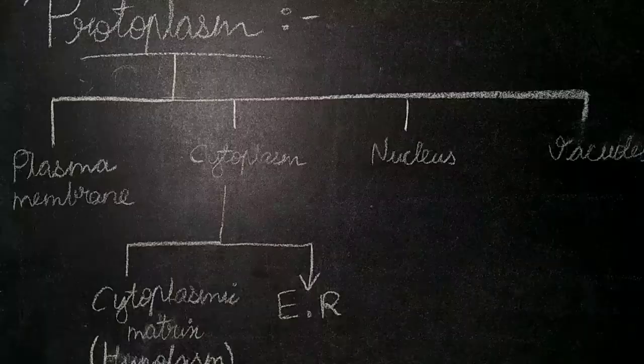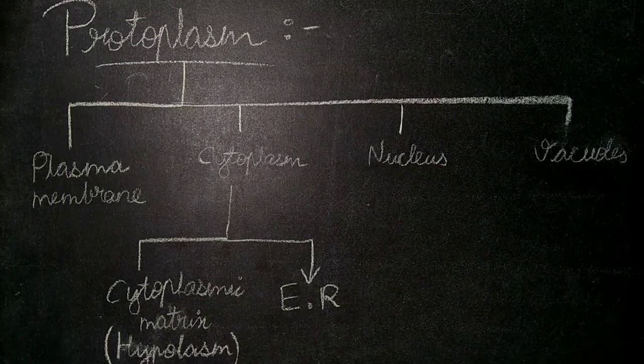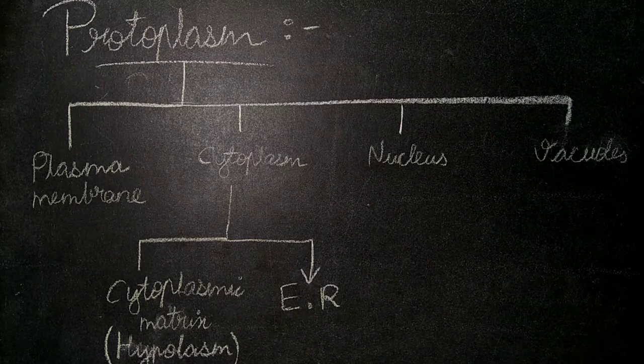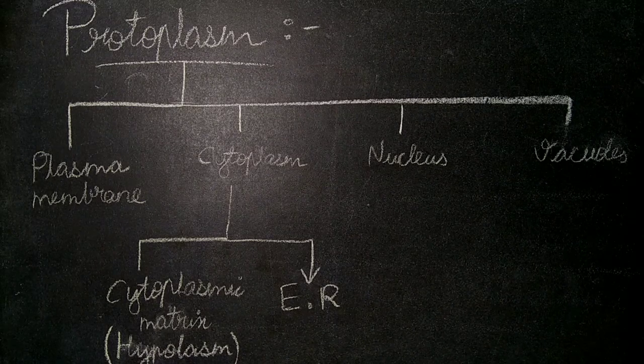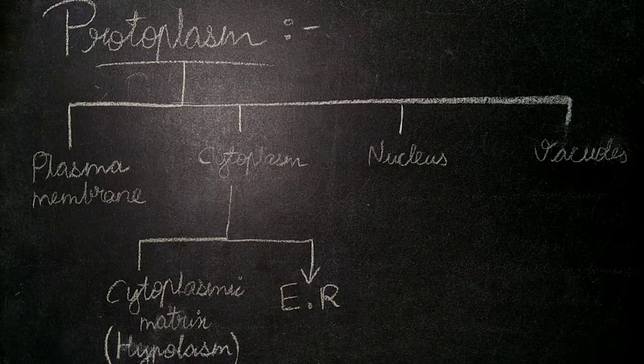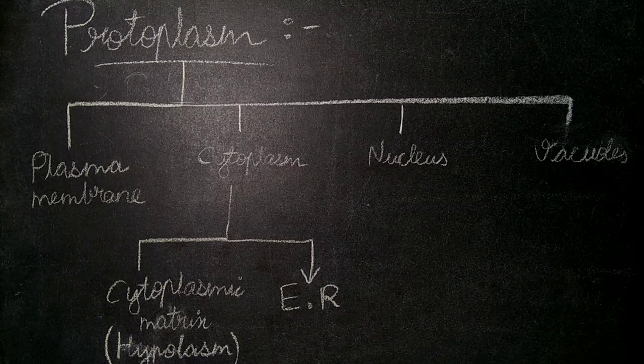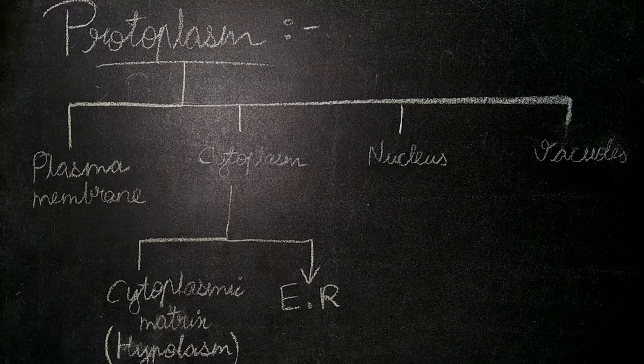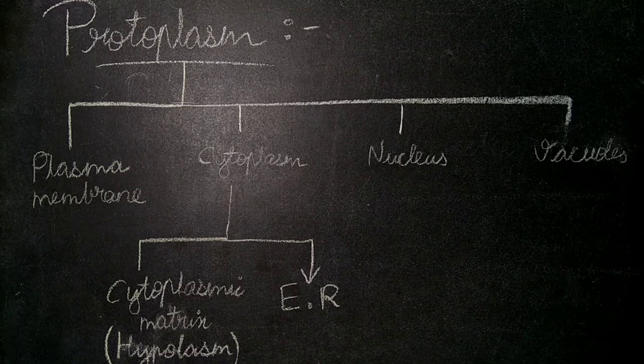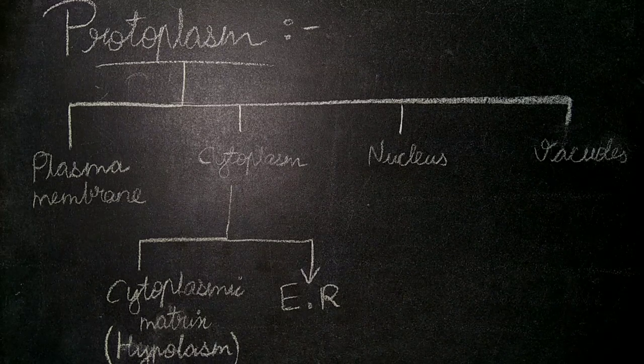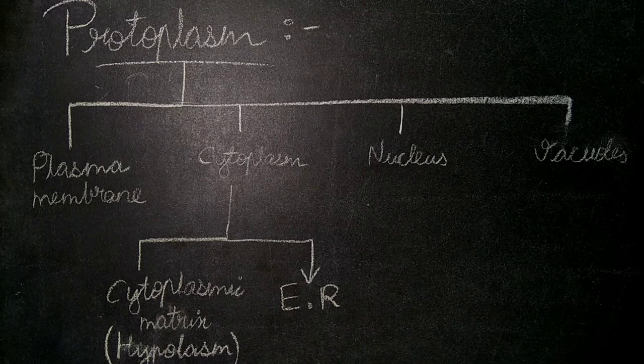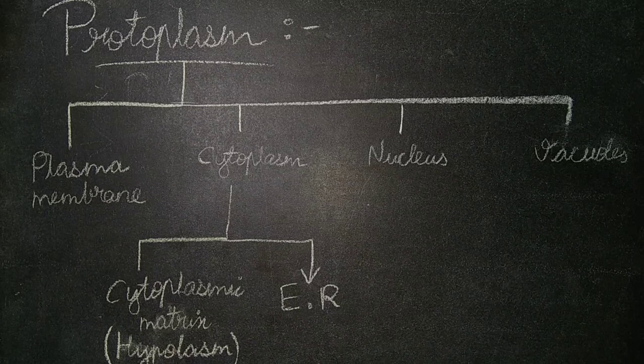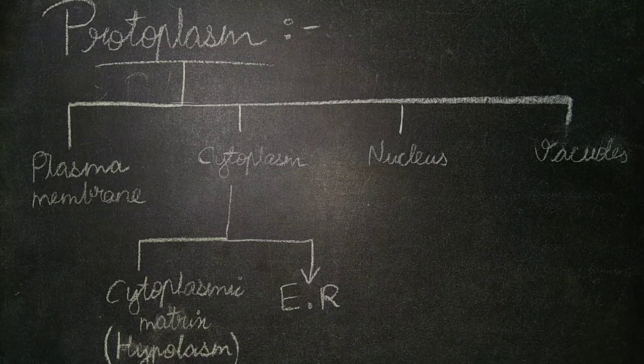Now let us discuss protoplasm. Protoplasm is differentiated into plasma membrane, which is also called the cell membrane or plasmalemma, and cytoplasm, nucleus, and vacuoles. Cytoplasm is distinguished into cytoplasmic matrix and endoplasmic reticulum or ER. Cytoplasmic matrix is also called hyaloplasm.